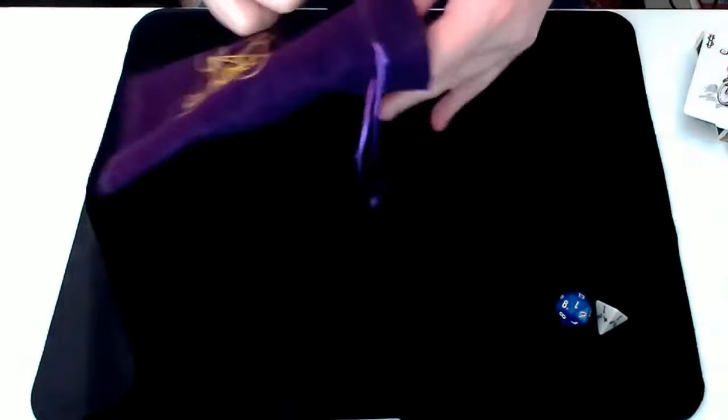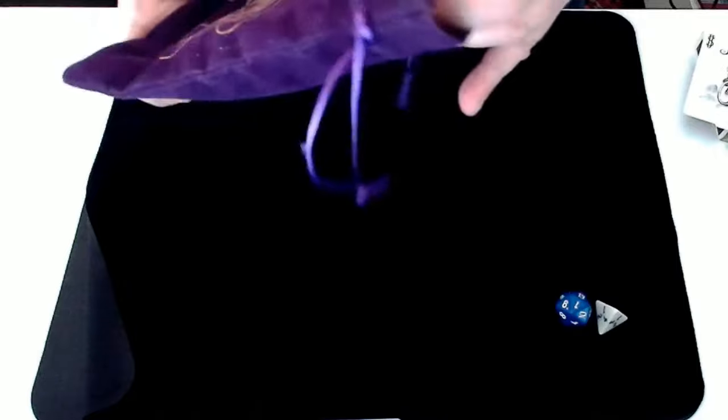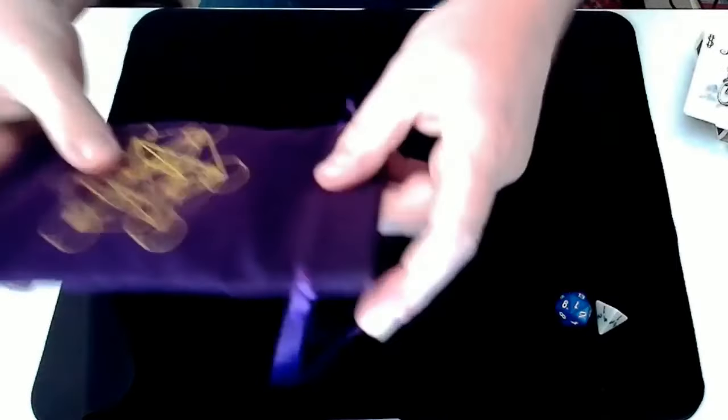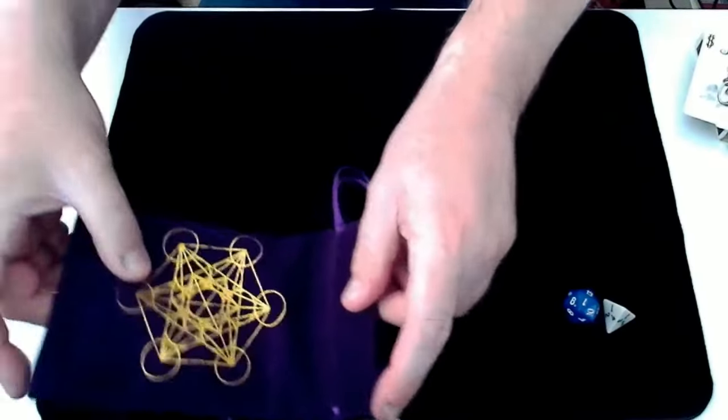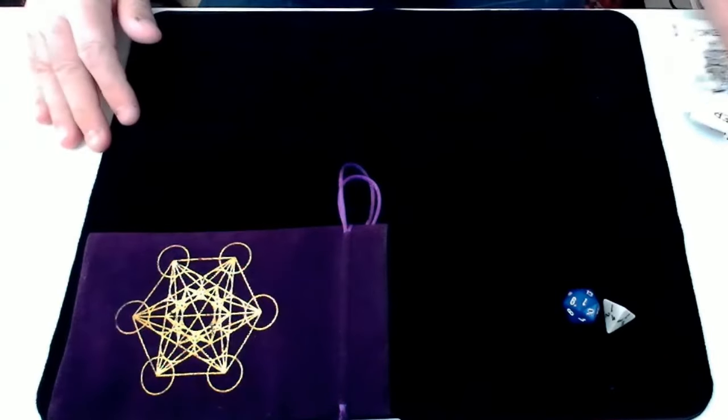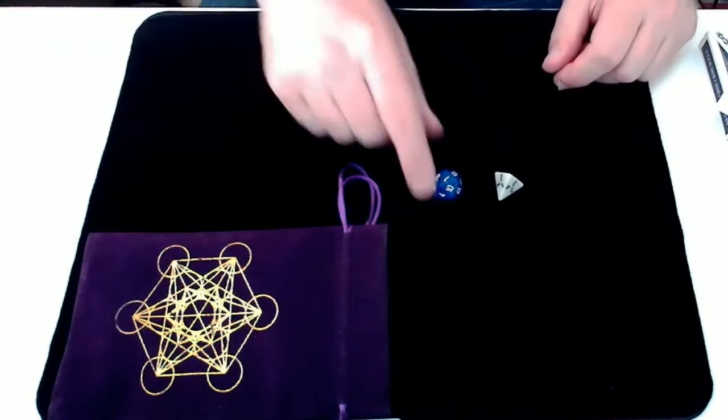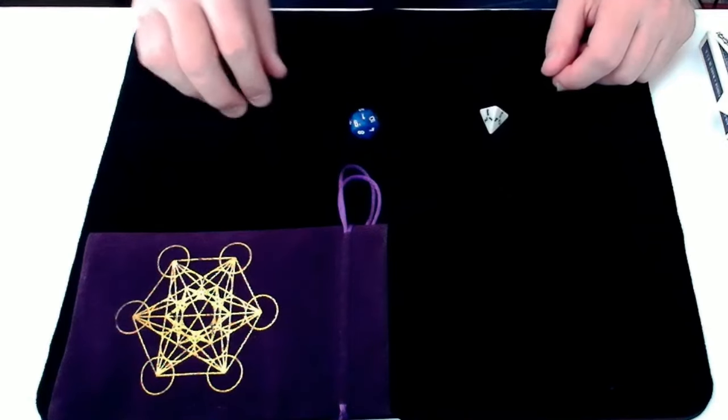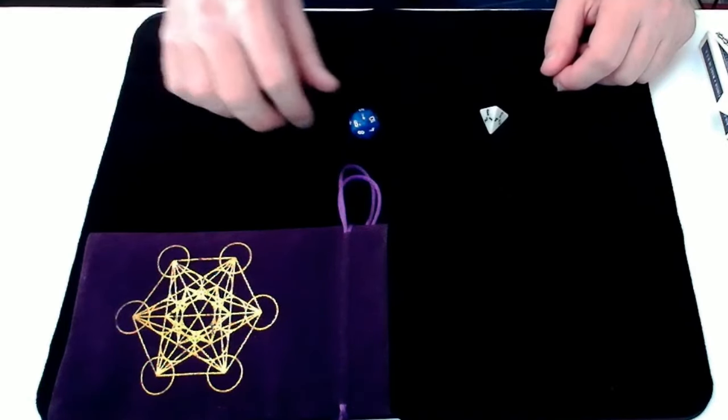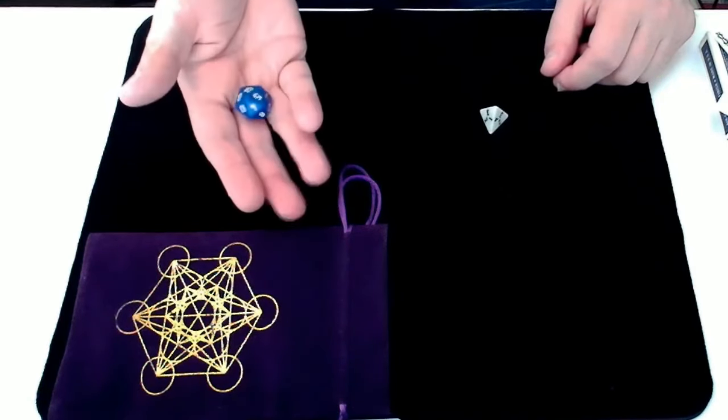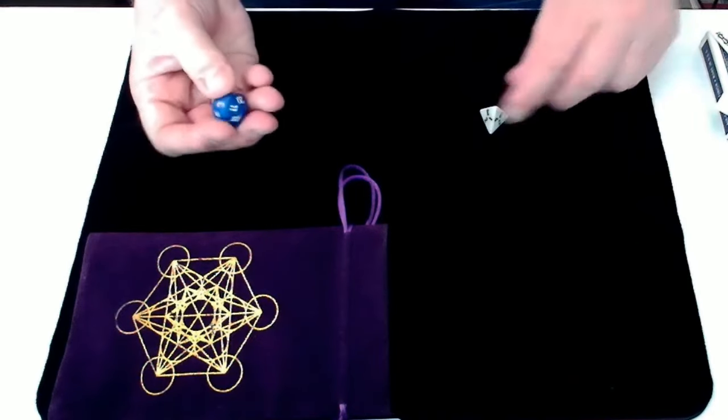And now if we place the cards into the bag, so there's no possible way I can see the faces of the cards again. And now we need a selection of any card. And again if you were here you could just choose any card you liked, but instead we'll use these dice to give us that random selection. So we have here a 20-sided dice that we'll use for the card value.